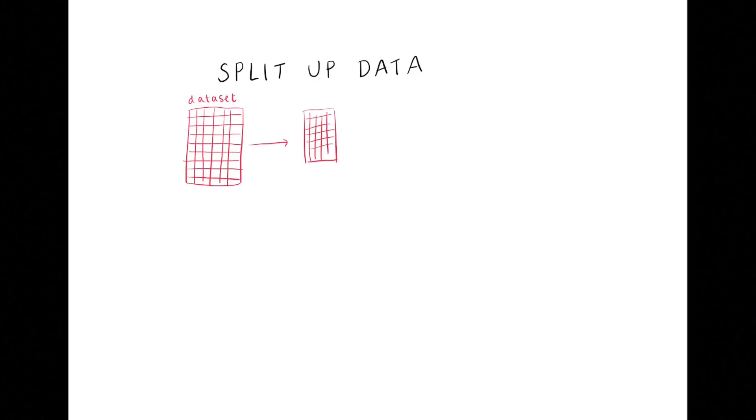You'll now need to split up your data into training, validation, and testing datasets. Usually, we keep the majority of the data for training. Validation data is used during development to check how the model is doing on data it hasn't seen during training, and then testing data is kept aside until the final model is done training to get a metric of how it performs on unseen data that did not affect it at all.